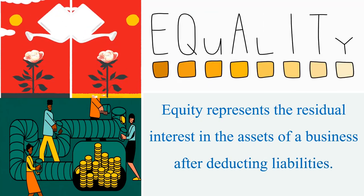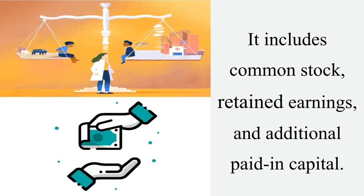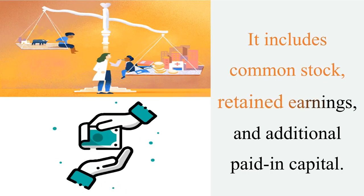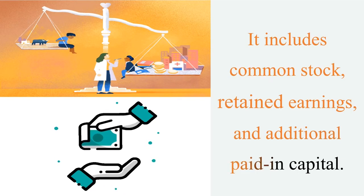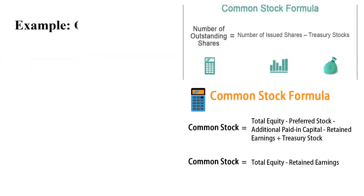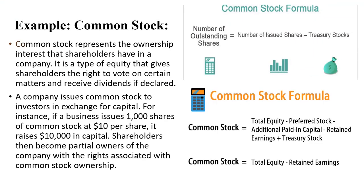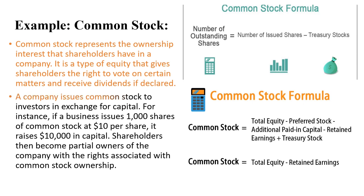Common stock represents the ownership interest that shareholders have in a company. It is a type of equity that gives shareholders the right to vote on certain matters and receive dividends if declared. A company issues common stock to investors in exchange for capital.